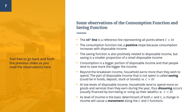Here are some key observations. The 45-degree line represents all points where consumption equals disposable income. The consumption function has a positive slope because consumption increases as disposable income increases. The saving function is also positively related to disposable income, but saving is a smaller proportion of smaller disposable incomes. Consumption is a bigger portion of disposable income, and people tend to save more as income grows. Beyond break-even income, households earn more than they wish to spend.